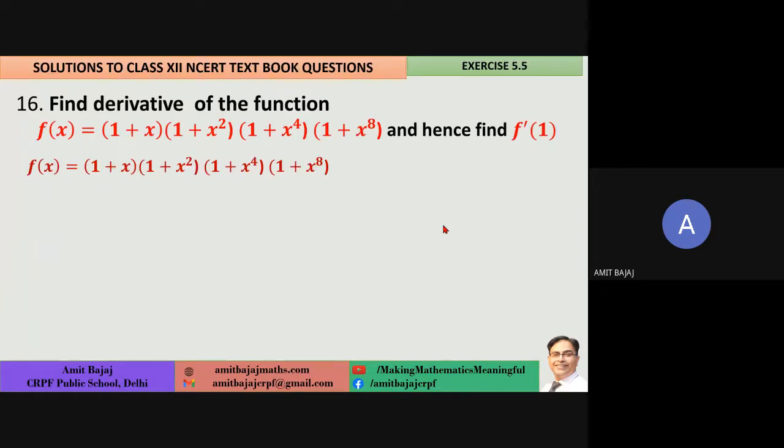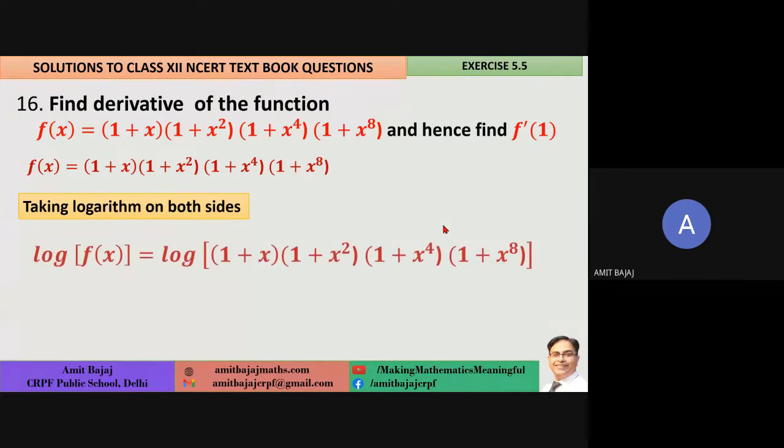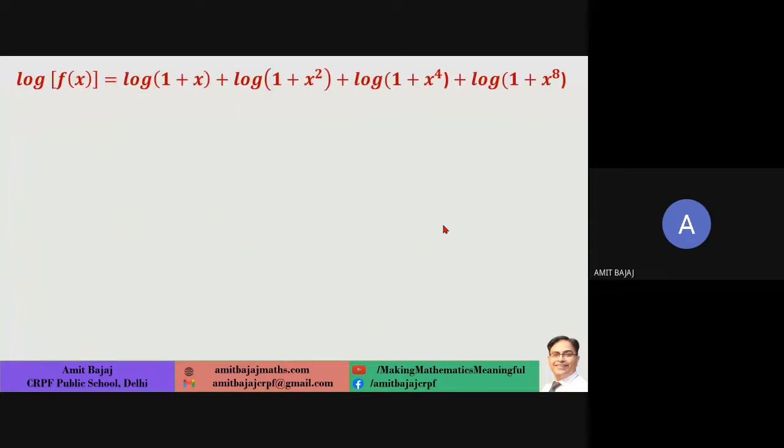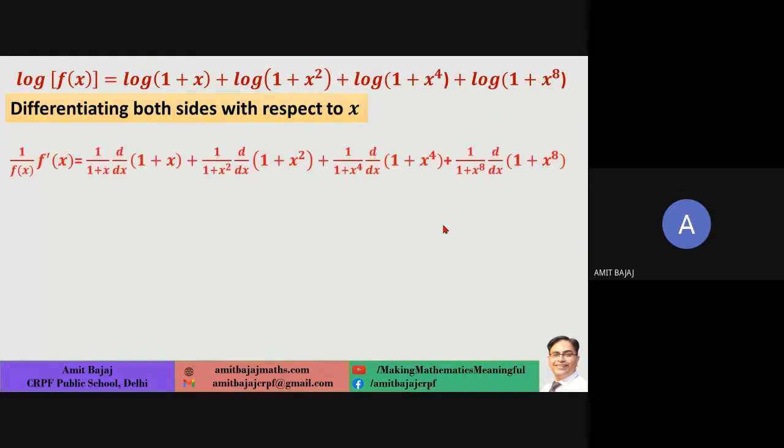Check out this question. Find the derivative of this function, and hence find f'(1). It's a product of four different functions. Of course, take log both the sides. In RHS, it is log(A·B·C·D), meaning log A + log B + log C + log D. I've copied this step. Now we will differentiate.